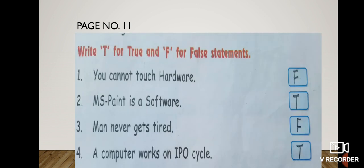Next is C part, write T for true and F for false. You cannot touch hardware. False, that is F. MS Paint is a software. True, T. Man never gets tired. False. A computer works on IPO cycle. True.